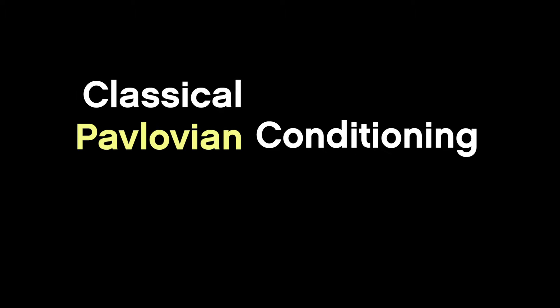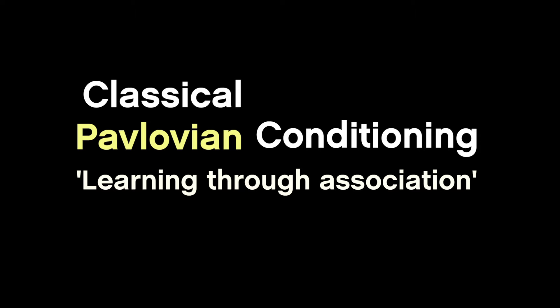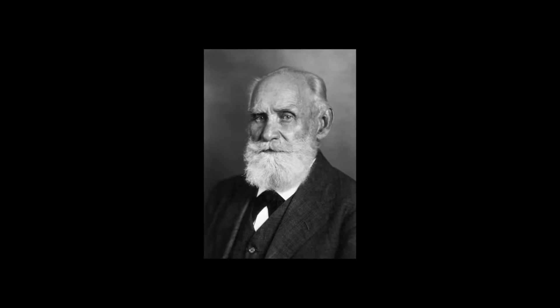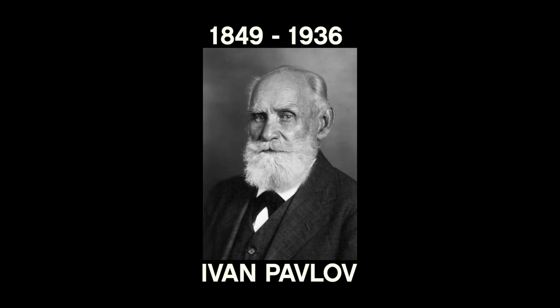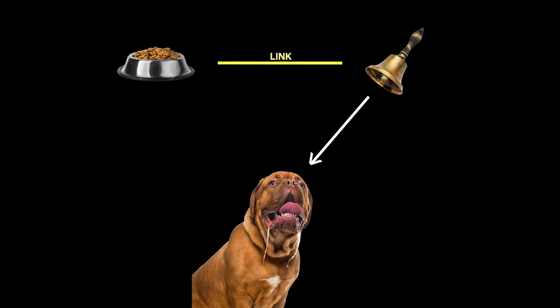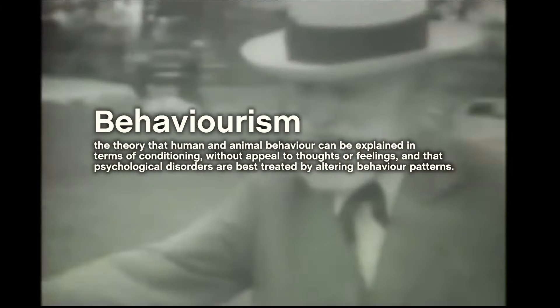Classical conditioning, otherwise known as Pavlovian conditioning, is learning through association. This was first perfectly demonstrated by Russian physiologist Ivan Pavlov in the 1890s. In simple terms, two stimuli are linked together to produce a new learned response in a person or an animal. The experiment Pavlov conducted, which is well known today and referred to as Pavlov's dog, serves as a backbone for modern psychology and is one of the seeds of behaviourism.